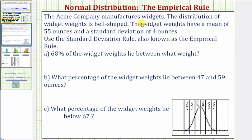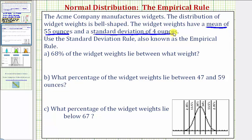The Acme Company manufactures widgets. The distribution of widget weights is bell-shaped. The widget weights have a mean of 55 ounces and a standard deviation of four ounces. We want to use the standard deviation rule, also known as the empirical rule, to answer the following questions.